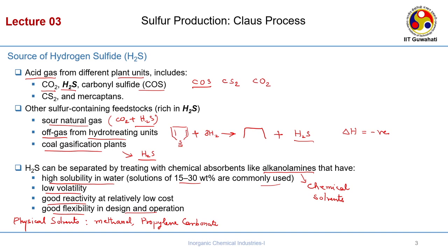We have now seen what are the sources of elemental sulphur. It is primarily hydrogen sulphide obtained from three sources: one is natural gas, one is the hydrotreating unit in oil refineries, and the other is coal gasification. These three sources are the by-products for the formation of elemental sulphur.